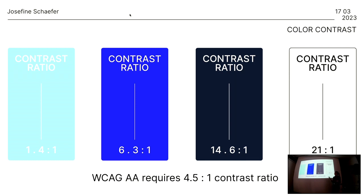The guidelines require a 4.5 to 1 contrast ratio to pass double A. You can see the last example is super hard to read — bright background with white font. Black font on white background is the easiest to read with the highest contrast ratio. If you have much larger writing — starting from 18 point font — or bold font at 14 point, the requirement goes down to a 3 to 1 contrast ratio.